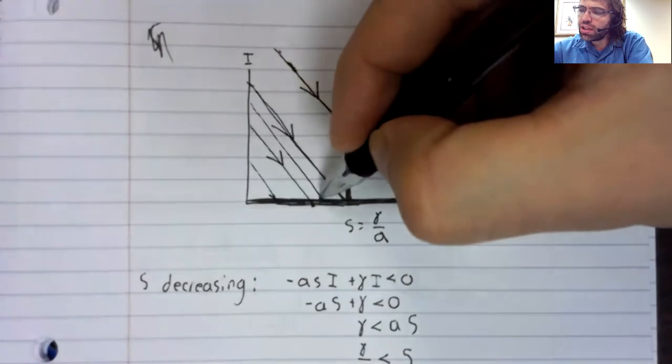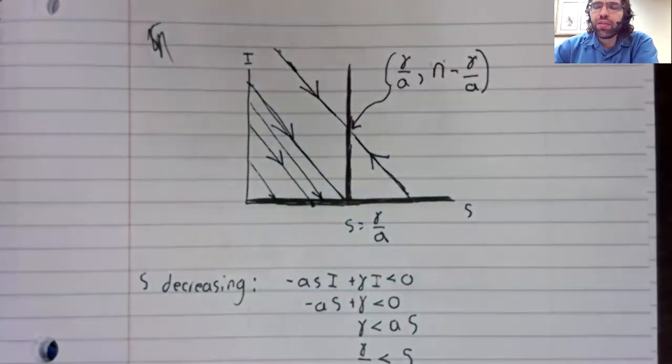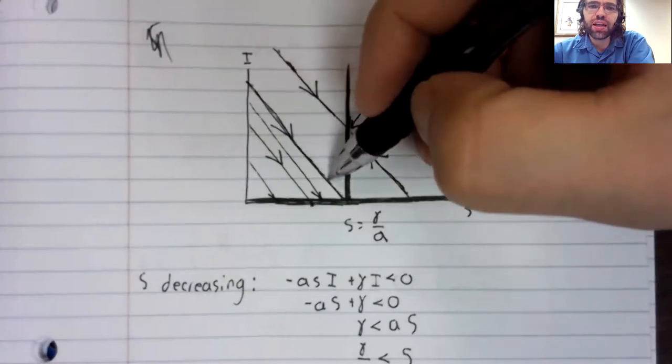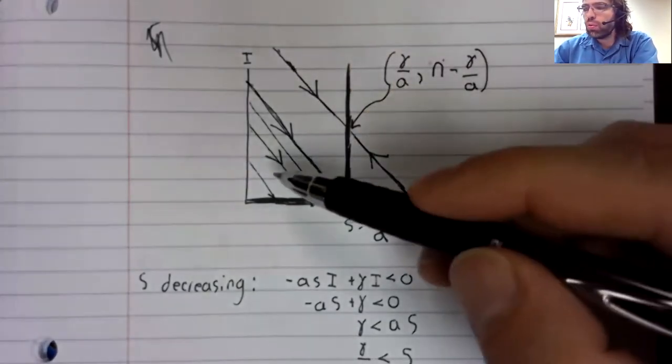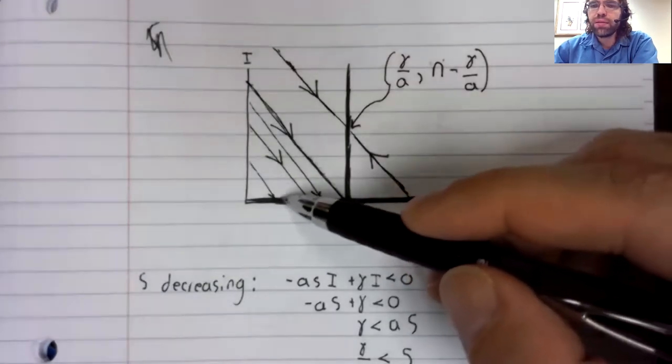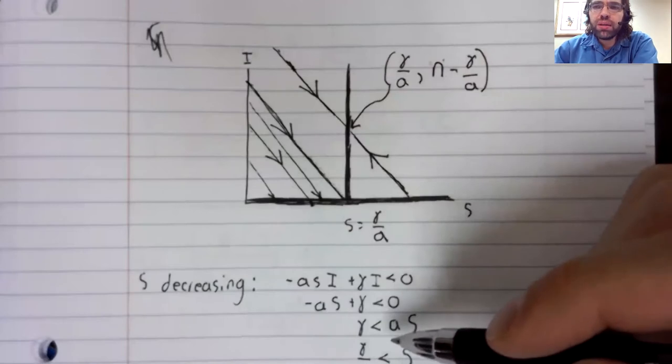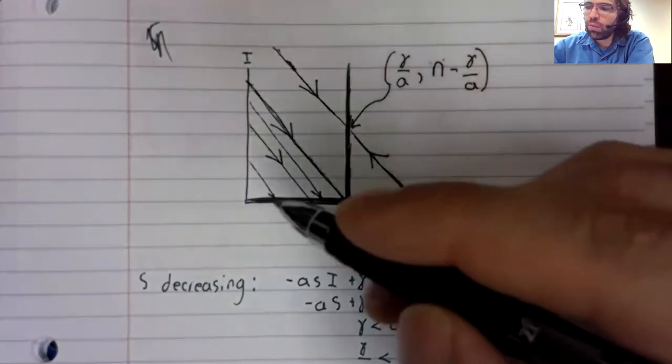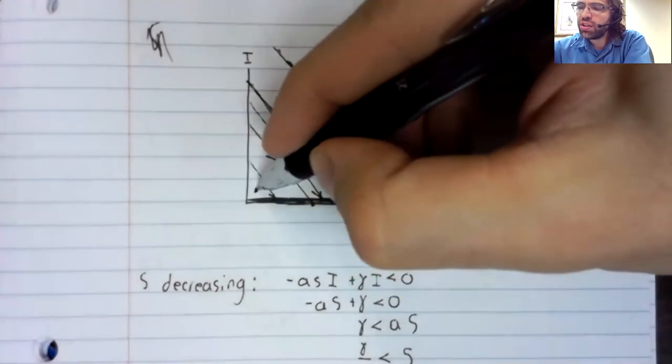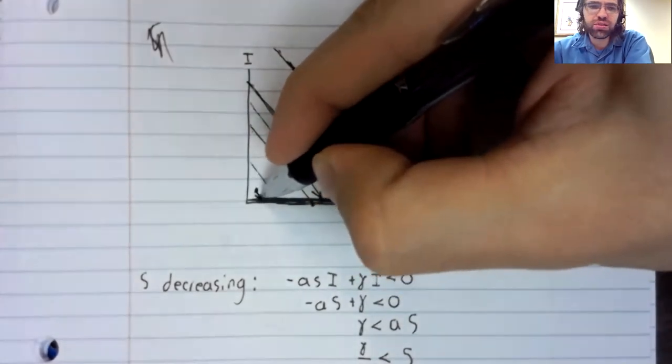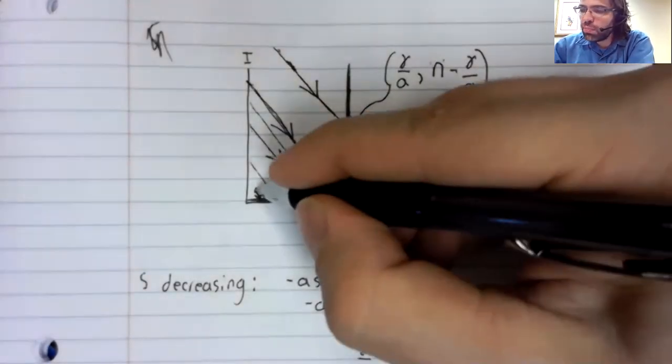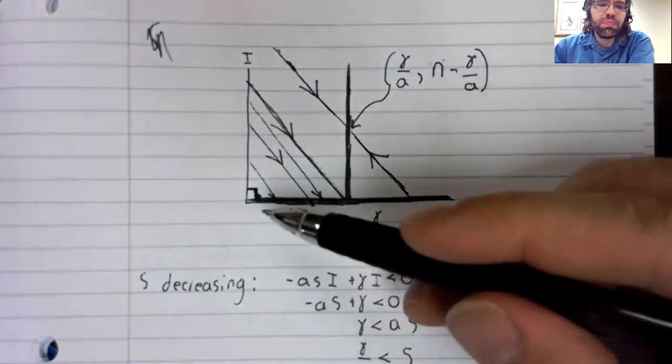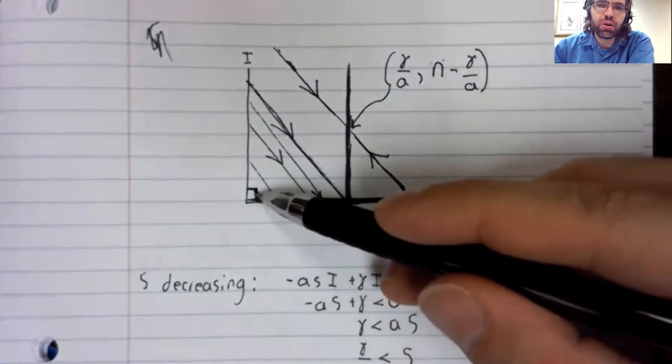So the disease persists unless we happen to be on one of the lines down here. And we could quantify that further. I mean, we could find the equation of this line. But just speaking in general, the disease gets wiped out only if the number of people in the population is very small. Like if you look at a fixed point here, this initial condition results in the disease being eliminated. And you see the number of susceptible people and the number of infected people are both quite small here. So the total population is quite small.